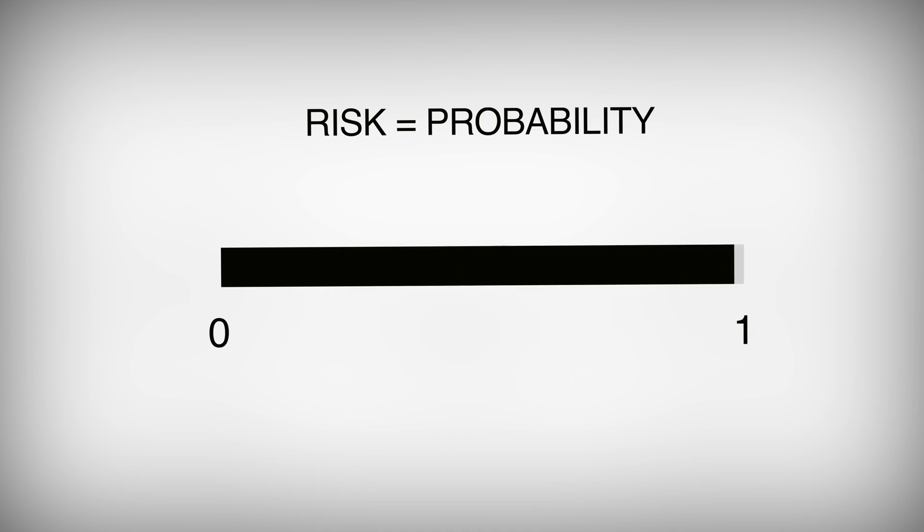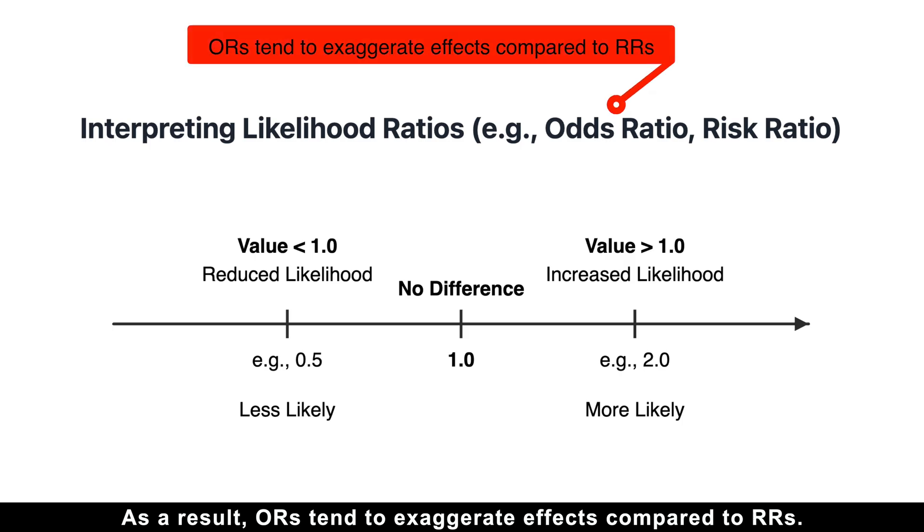Risk, or probability, is bounded between 0 and 1, while odds range from 0 to infinity. As a result, odds ratios tend to exaggerate effects compared to risk ratios.